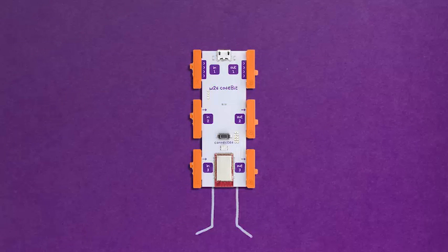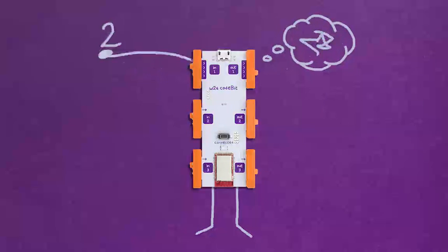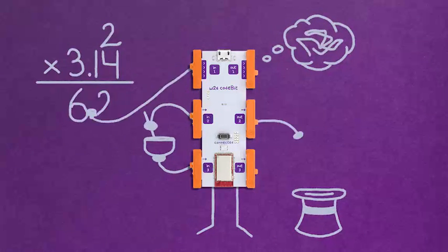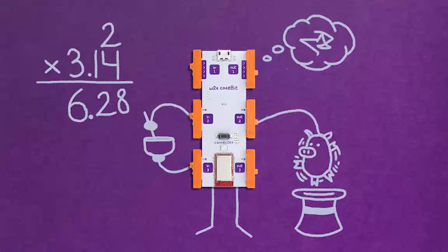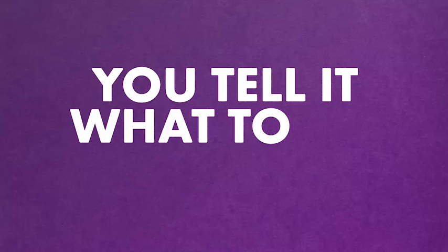And like your brain, the code bit can do way more than just send and receive signals. Its real magic is in its ability to think, to compute, to follow instructions, and if you ask it to, to do something completely random. What it thinks and what rules it follows are up to you. You tell it what to do with code.